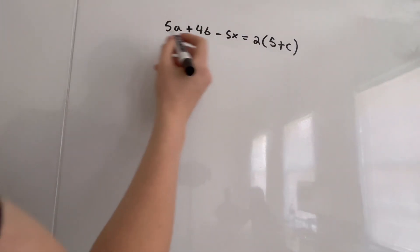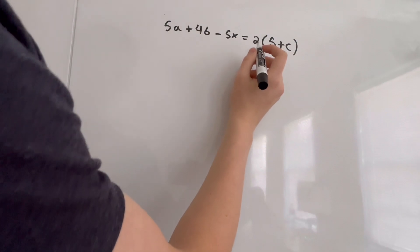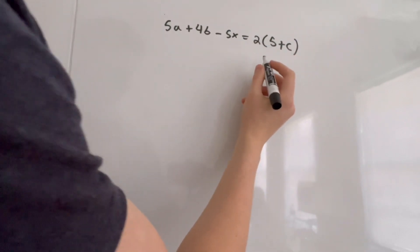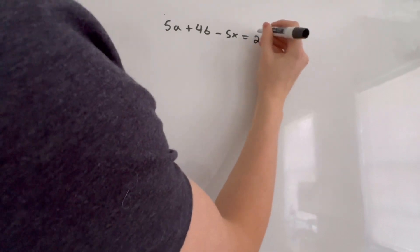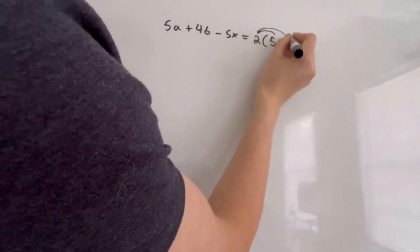All right, so in this problem, we have 5A plus 4B minus 5X equals 2 times 5 plus C. The first thing we always have to start off with is distributing. So we have to do 2 times 5 and 2 times C.